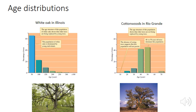After the construction of these dams, there has been no successful reproduction of these cottonwoods for around a decade. By looking at this age distribution we can see that the cottonwood population is declining, and that this species in this area is under intense threat of extinction.